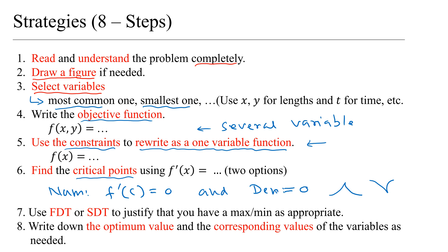After finding the critical points, you are not done yet. You need to justify that you have a maximum or minimum — otherwise your problem is not complete. Use the first derivative test or second derivative test to justify that you get a maximum or minimum. Finally, write the optimum value, stating the corresponding values clearly, so that's how you complete the problem. Those are the eight steps, and now we can start solving some problems.